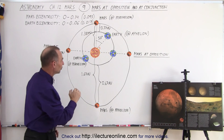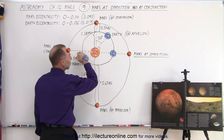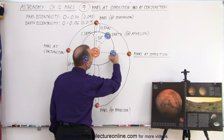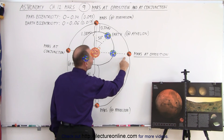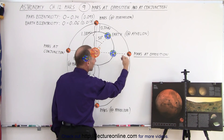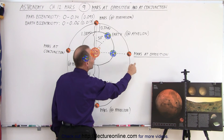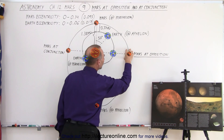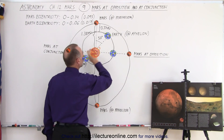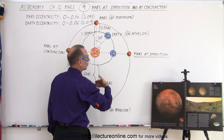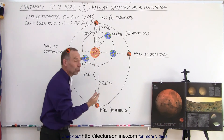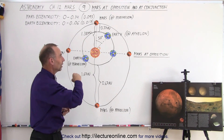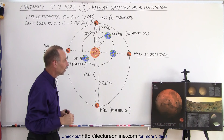When Mars and Earth appear on the same side of the Sun along the same line, we say that Mars is at opposition — it's opposite to the Sun from us. That's why they call it opposition: it's on the opposite side relative to the Sun.